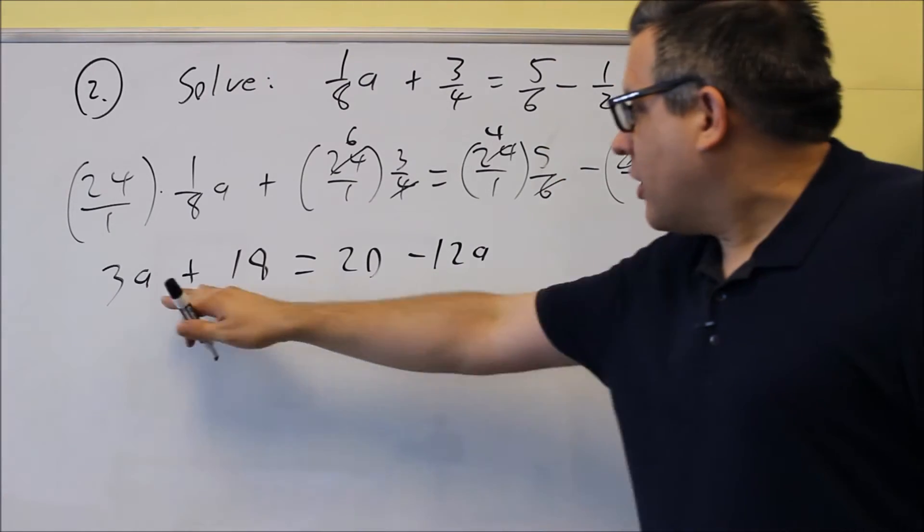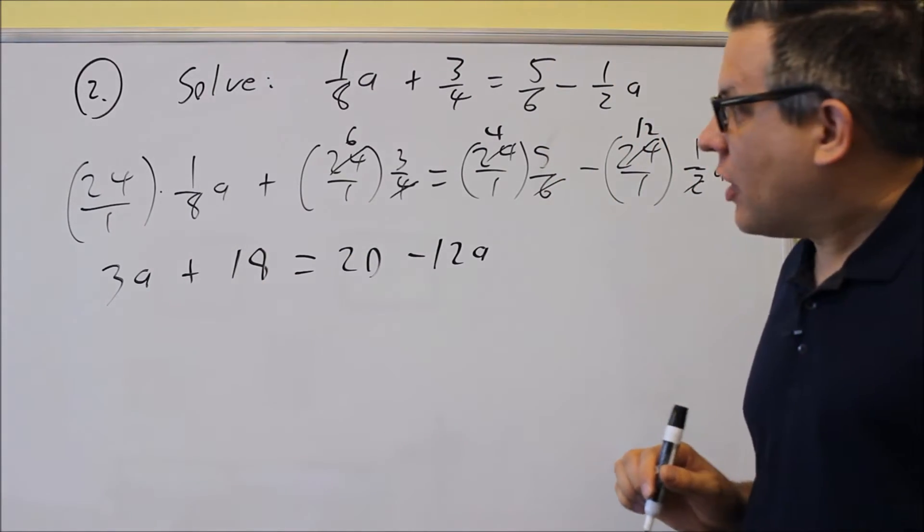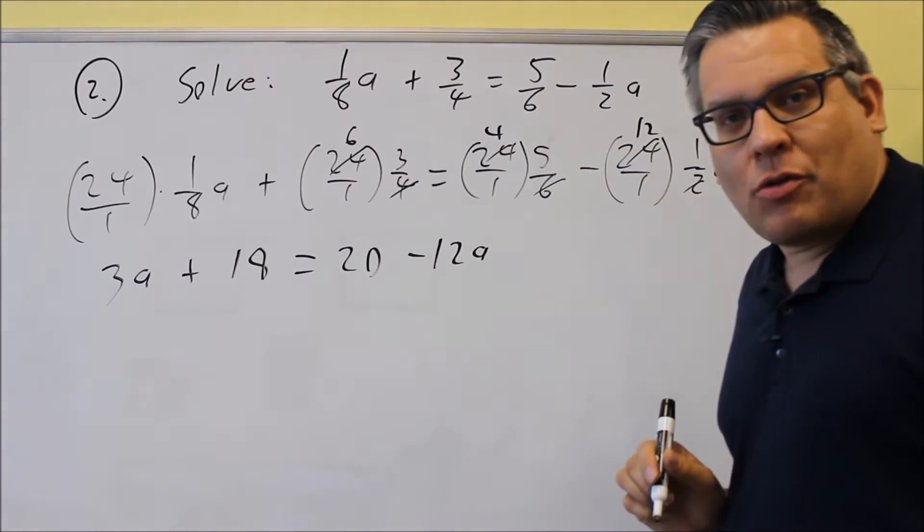Alright, so that first step we've taken care of, we've cleared out all the fractions, and again, that's the reason why I'm multiplying by the least common multiple.